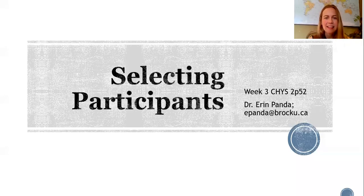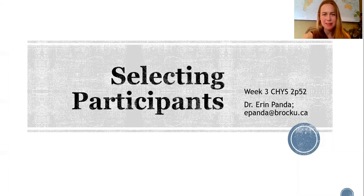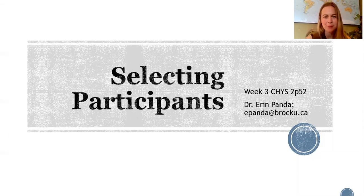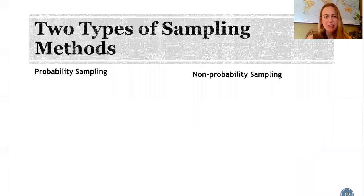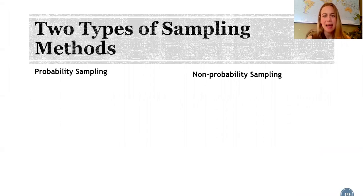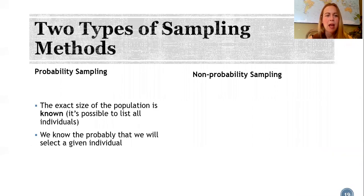Hi guys, Erin here. In this video you'll learn about different methods of selecting participants to obtain a more or less representative sample. We'll talk about two main categories of sampling: probability sampling and non-probability sampling.